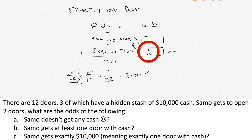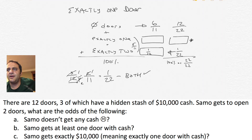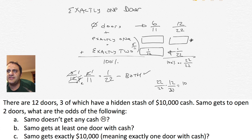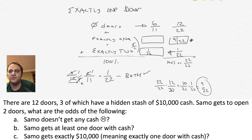So 1/22 is the odds that both doors have cash. Converting to a common denominator of 22, zero doors is 12/22 and both doors is 1/22. Since all three outcomes must equal 22/22, we subtract: 22/22 minus 12/22 gives 10/22. Then subtract the probability of both doors — 10/22 minus 1/22 equals 9/22. So 9/22 is the odds that exactly one door has cash.